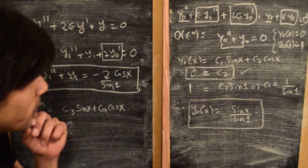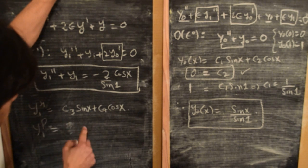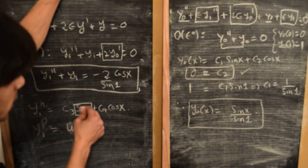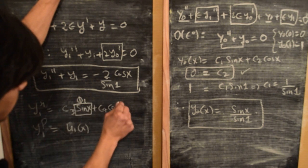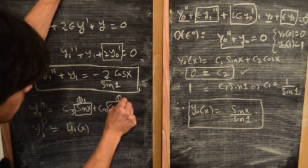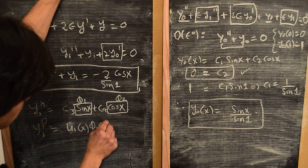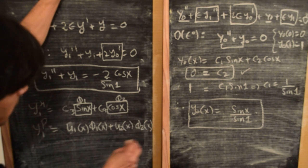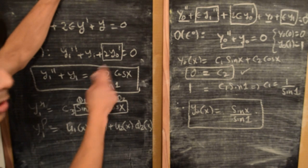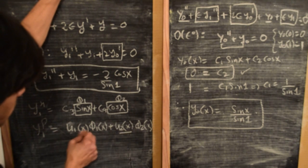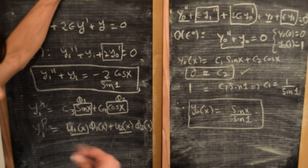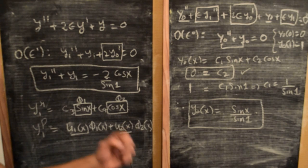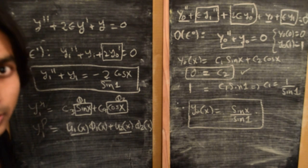The basic idea behind the method of variation of parameters is to look for a particular solution of the form u₁(x)·φ₁(x) + u₂(x)·φ₂(x), where φ₁ and φ₂ are the known homogeneous solutions and u₁, u₂ are functions to be determined. We'll continue this in the next part of the video where we'll solve this equation using the method of variation of parameters, then combine all the solutions.